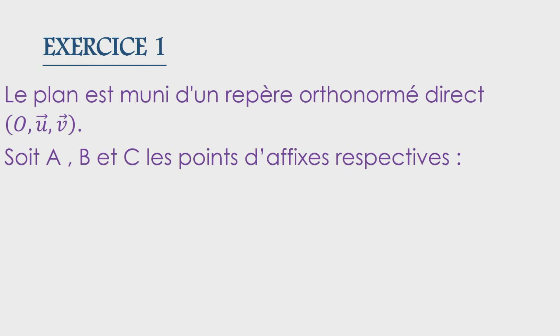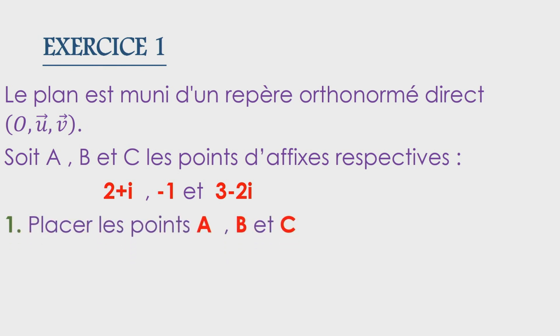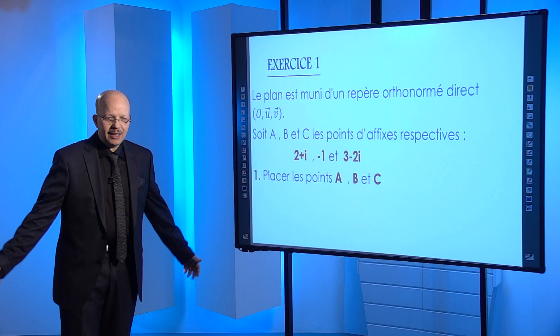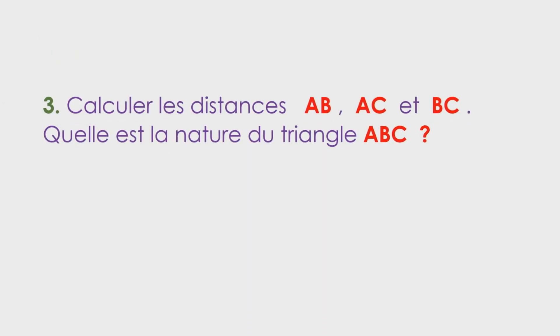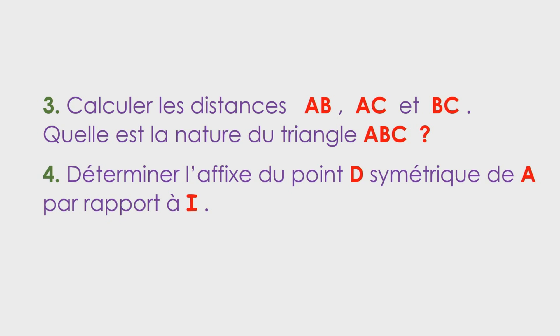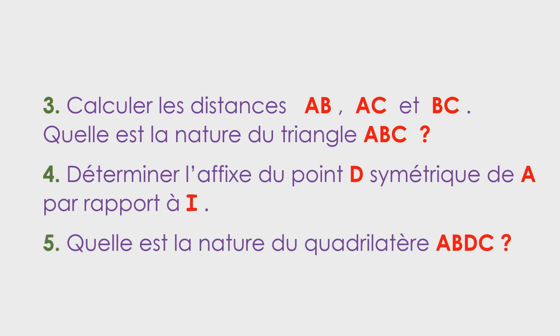Voilà notre exercice. Le plan est muni d'un repère orthonormé direct. Soit A, B et C les points d'affixes respectives 2+i, -1, et 3-2i. Placez les points A, B et C. Déterminer l'affixe du point I, milieu du segment BC. Calculez les distances AB, AC et BC. Quelle est la nature du triangle ABC ? Déterminer l'affixe du point D, symétrique de A par rapport à I, puis quelle est la nature du quadrilatère ABCD ?